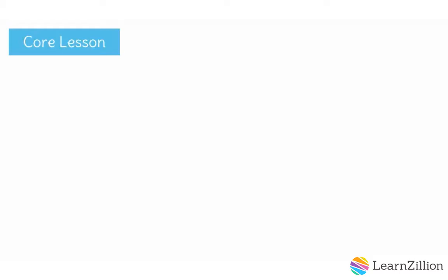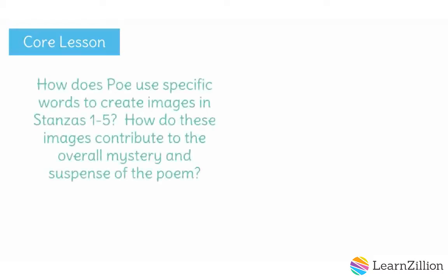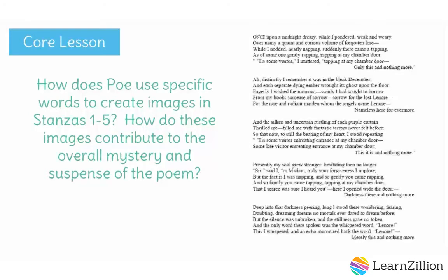Remember, we are trying to answer the question: how does Poe use specific words to create images in stanzas 1 through 5, and how do these images contribute to the overall mystery and suspense of the poem? Let's zero in on these stanzas.